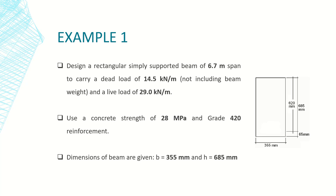The second load is a superimposed load, presented as a uniformly distributed linear load with a value of 14.5 kilonewtons per meter. The third load is live load, also a uniformly distributed load with an intensity of 29 kilonewtons per meter.